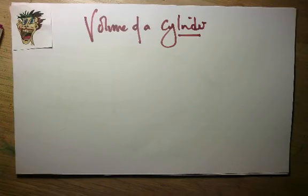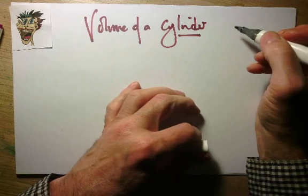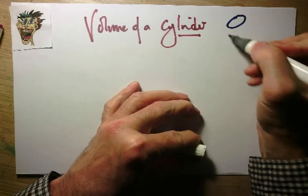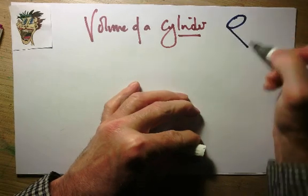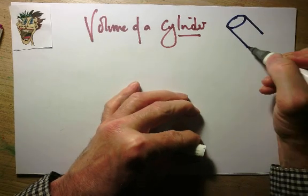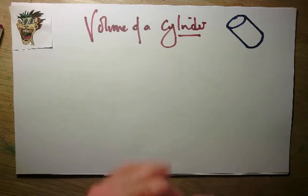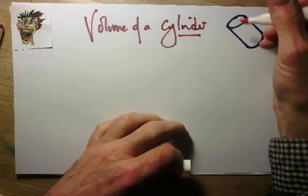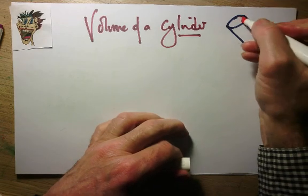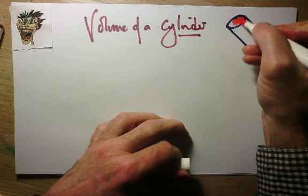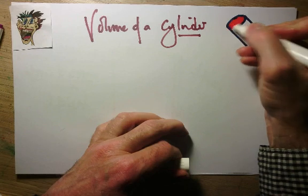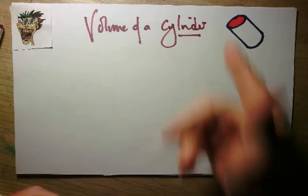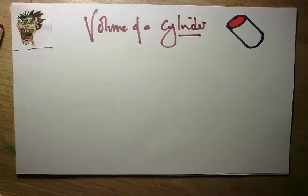We come now to the volume of a cylinder. I'm just going to sketch a cylinder here — a sort of squashed circle and then parallel lines with a rounding at the end. I want you to remember that a cylinder, like the cuboid, is another type of prism because that circle goes all the way through.